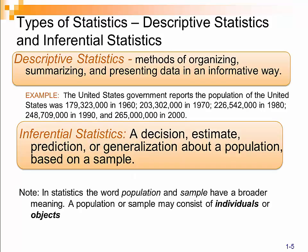We have what are called descriptive statistics and inferential statistics. Descriptive statistics are self-explanatory to a certain degree — we are looking at statistics that describe something. It's a method of organizing, summarizing, and presenting data in a way that's informative. The example on the screen is the United States government reporting the population of the United States was 179,323,000 in 1960, and so on down the line.